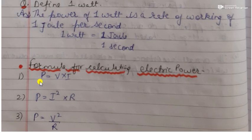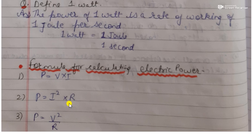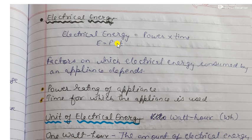The formulas are: power equals potential difference multiplied by current (P = VI), power equals square of current multiplied by resistance (P = I²R), and power equals square of potential difference divided by resistance (P = V²/R).